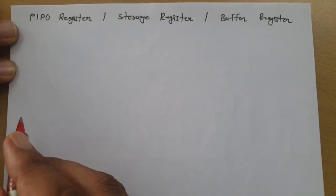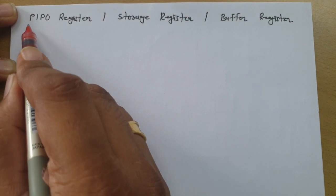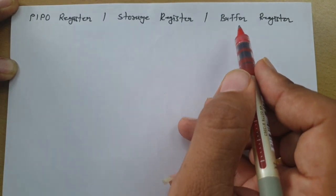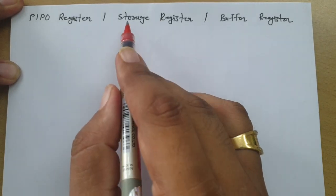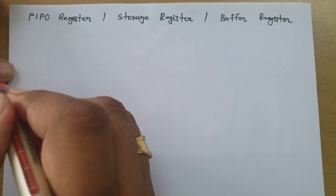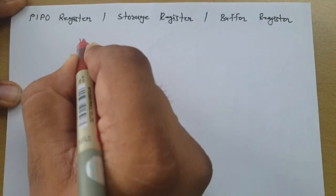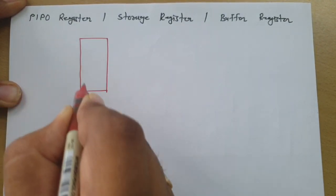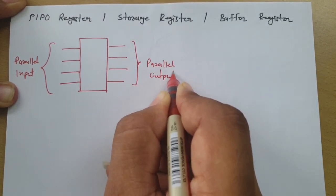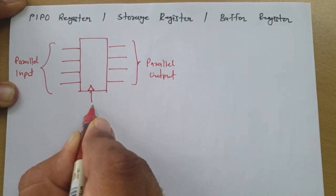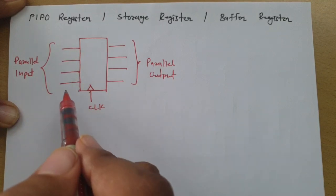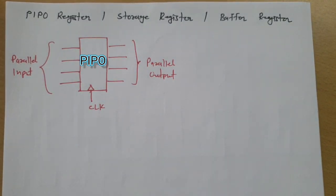Welcome to the digital electronics lecture series. Professor Iris Dolakia is going to explain parallel input parallel output register, which is also referred to as a storage register and a buffer register. If you consider parallel input parallel output as a basic block, we have parallel input on one side and parallel output on the other side. This input will appear at the output when we give a clock signal.